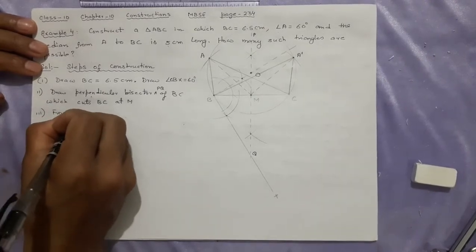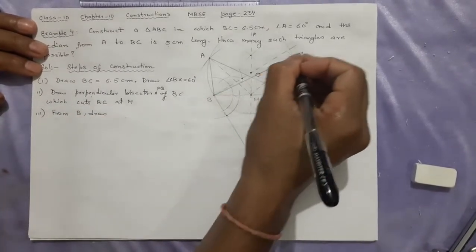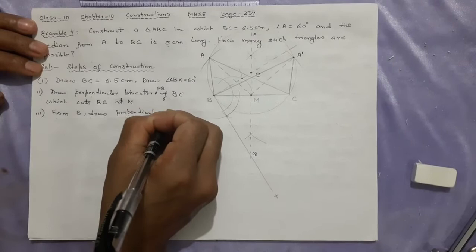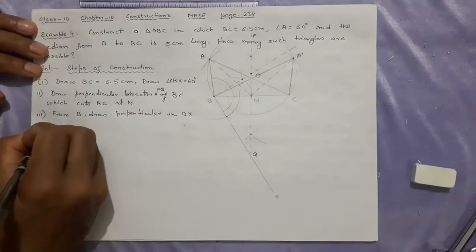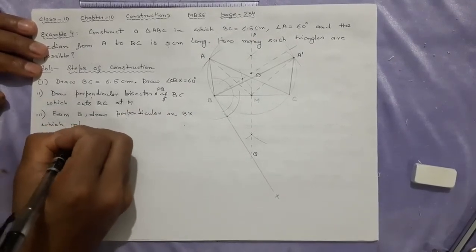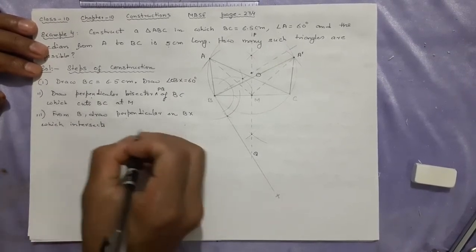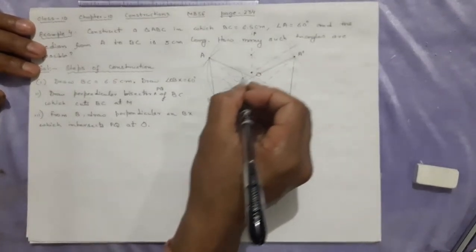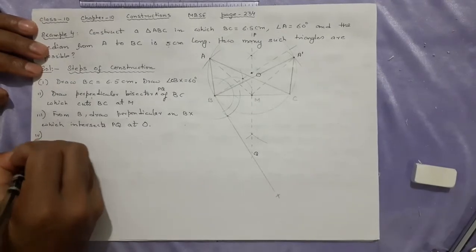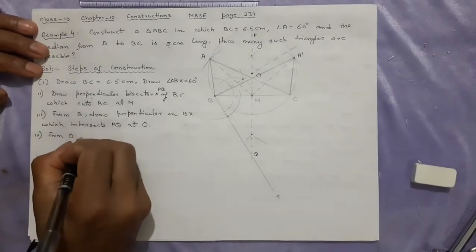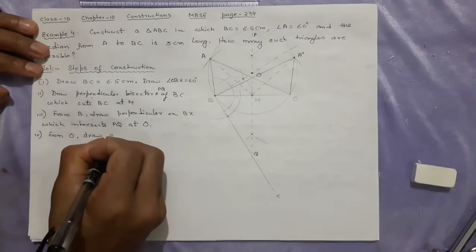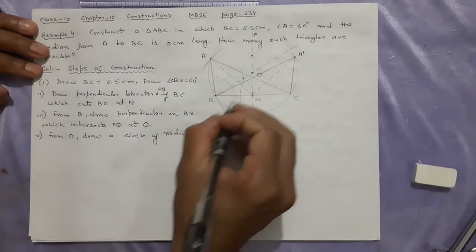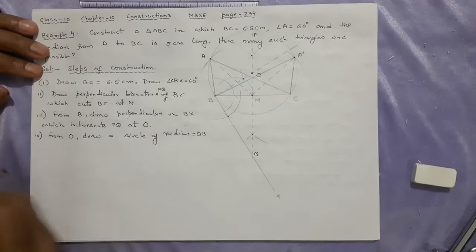From B, draw this perpendicular on BX, which intersects PQ at O. When you are drawing this 90 degrees, it will cut at O. As soon as O comes, what do you do? From O, draw a circle of radius OB equal to O. Done.